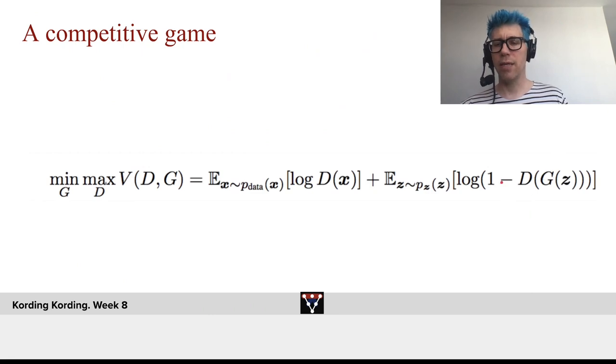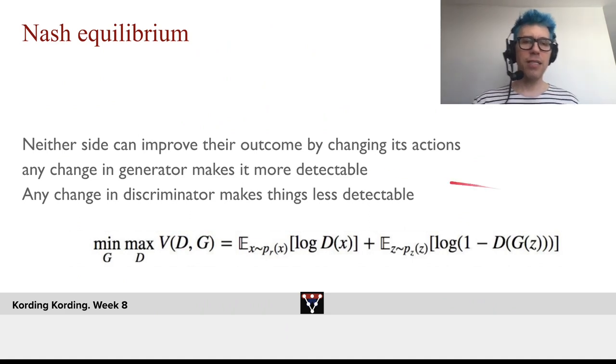And this, we have the expected value over the Zs, which are the parameters that go into the generation of the log of 1 minus the discriminator applied to the generator applied to Z. And now this, of course, will stop once we reach a Nash equilibrium.